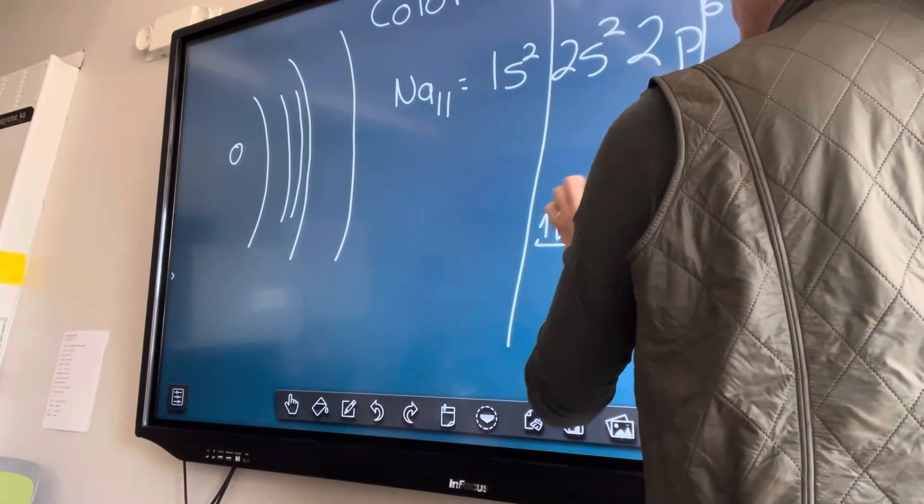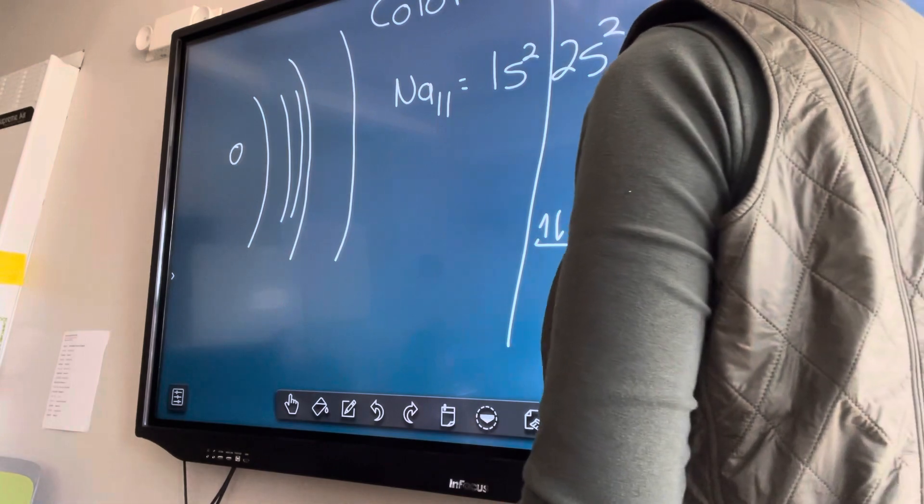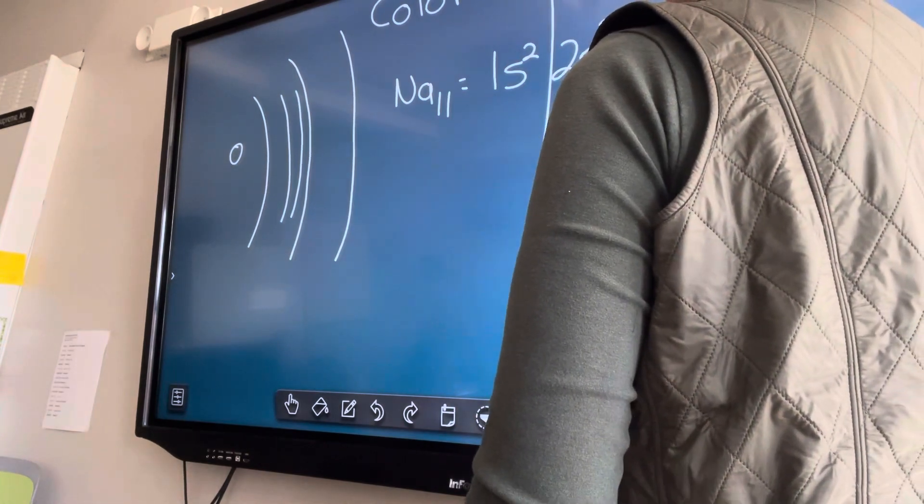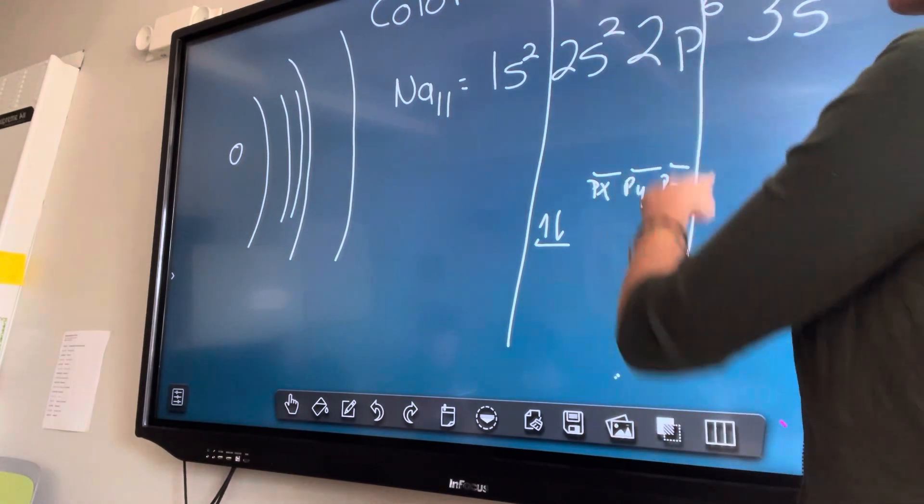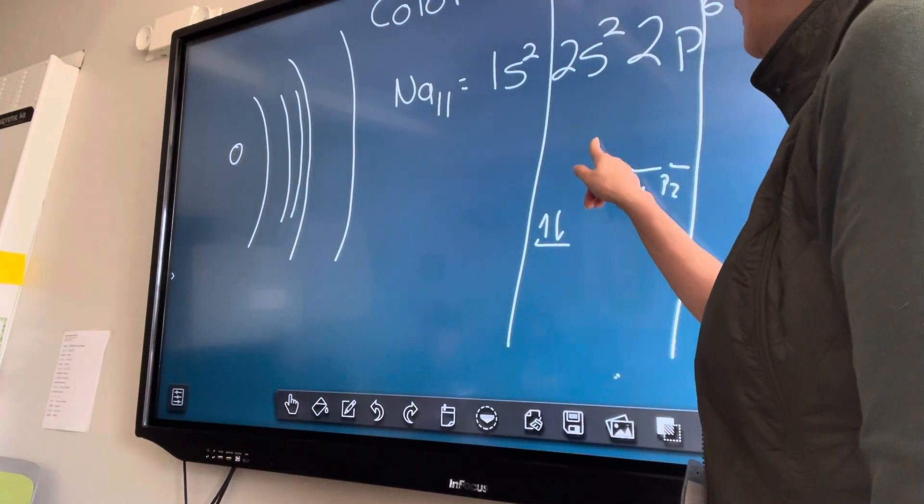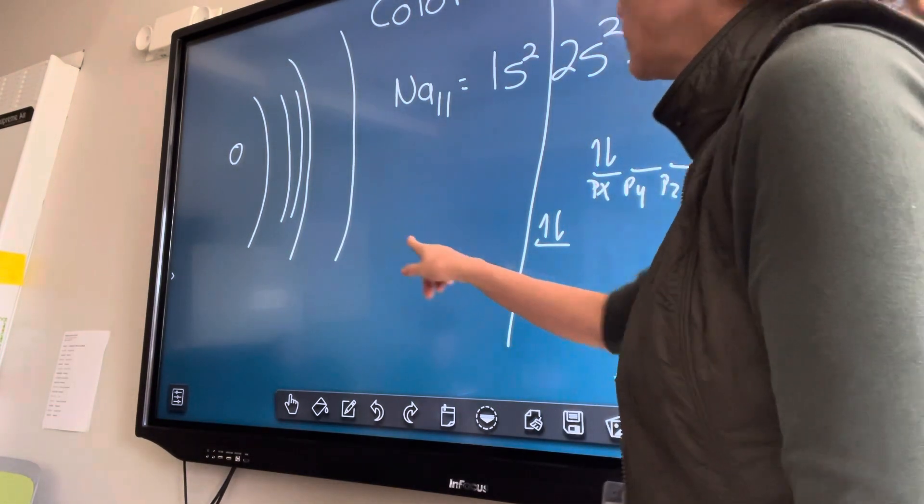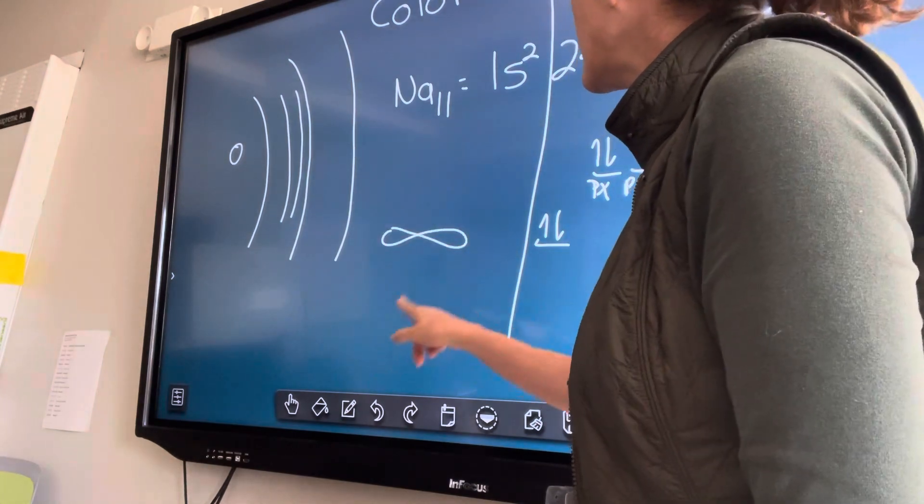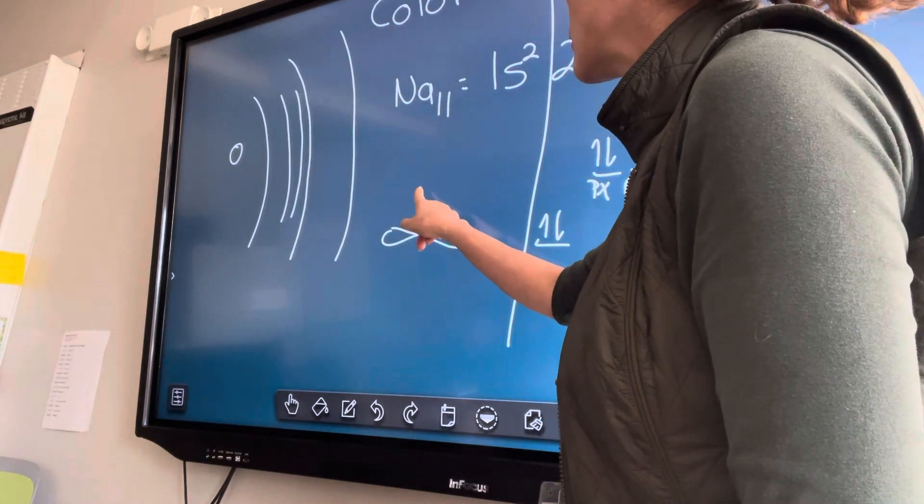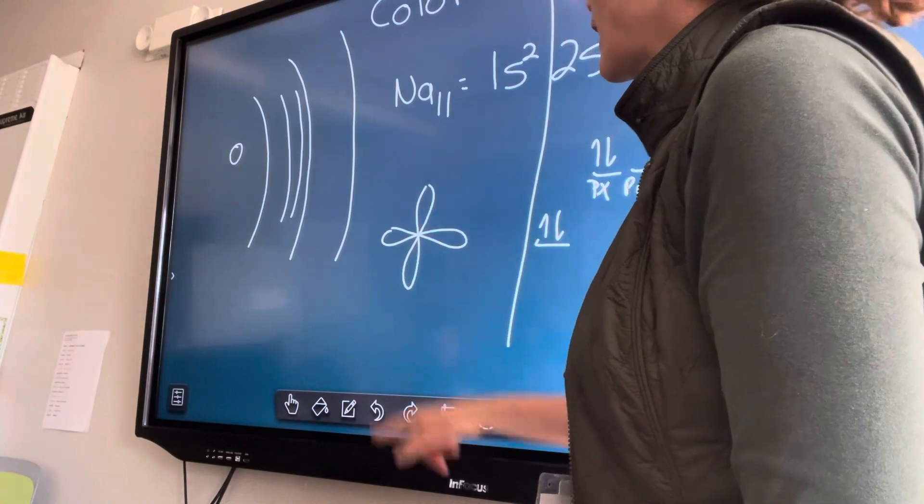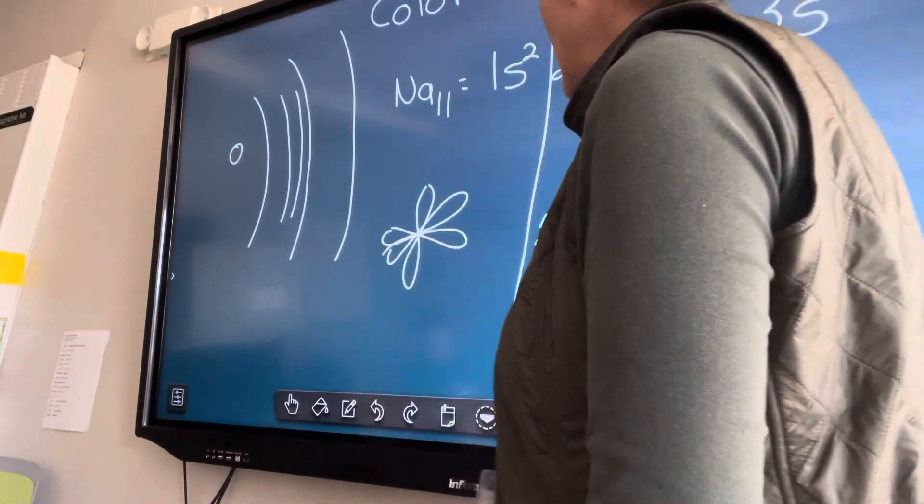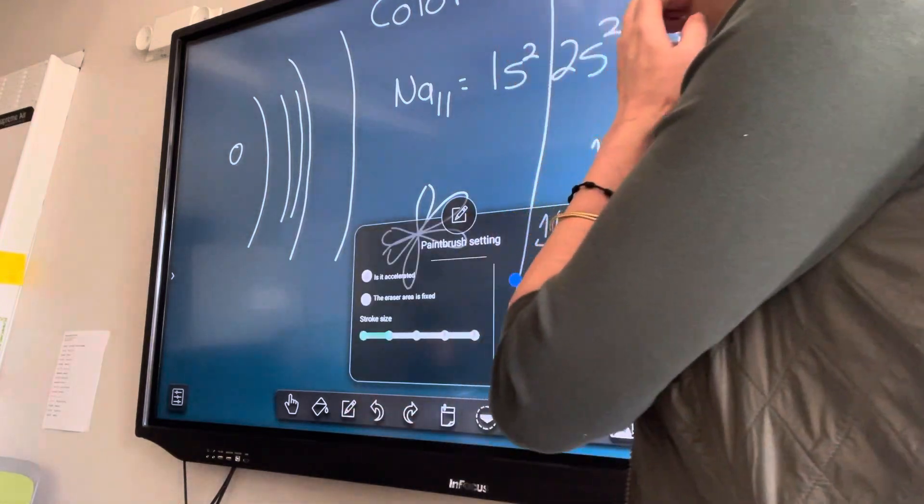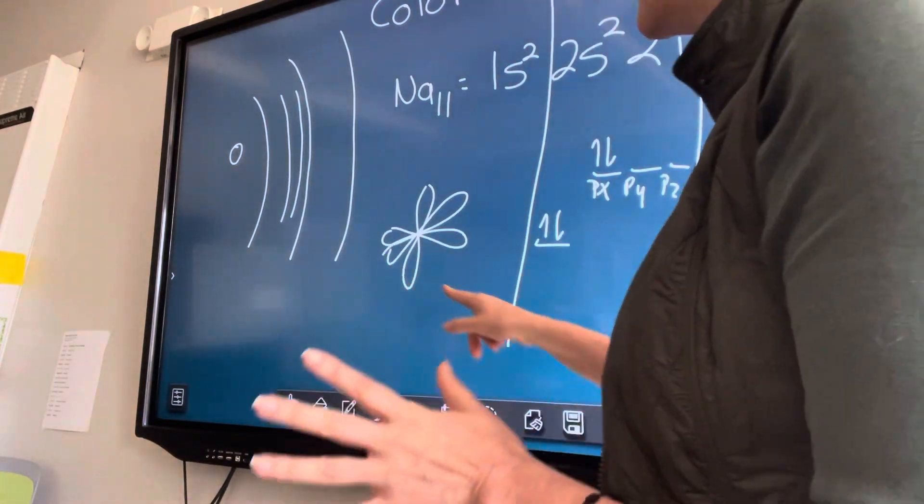So for the s orbital you have 2. For the p, I told you that there is px, py, and pz, and each one of those has 2, right? You have 2 going around px. px is like that, it's like a dumbbell in the x direction, py is like a dumbbell in the y direction, and pz is like a dumbbell in the z direction.